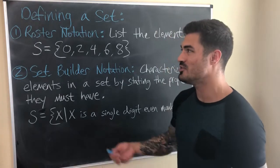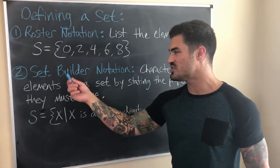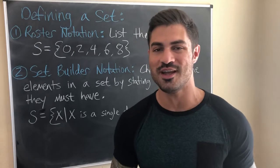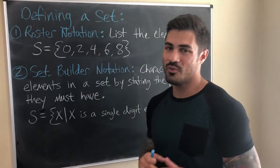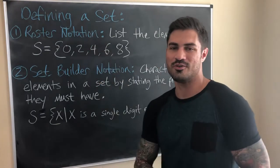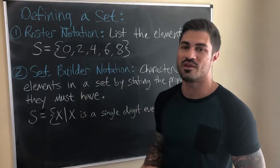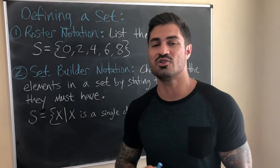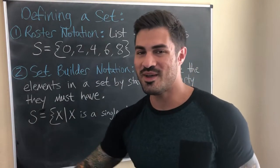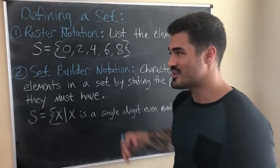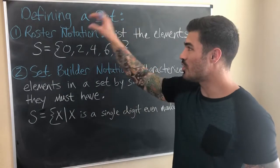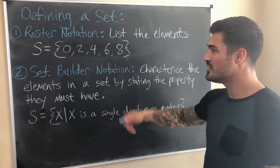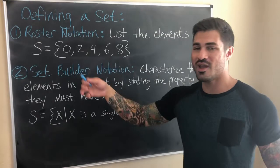There are a couple of different ways we can define a set: roster notation or set builder notation. Make sure you're paying attention to what you're being asked to do, and know that you will have to be able to read and interpret both notations, especially if you continue in mathematics. Roster notation: we literally just list the elements, put commas in between them, and put curly brackets on the ends. That's roster notation.